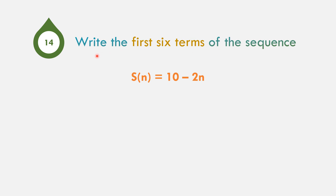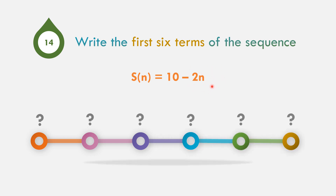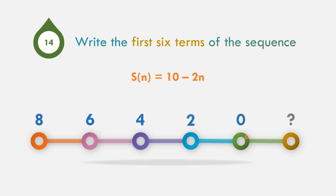In example number 14, write the first six terms where s(n) equals 10 minus 2n. Replace n by 1: 10 minus 2 is 8. Replace n by 2: 10 minus 4 is 6. Replace n by 3: 10 minus 6 is 4. The pattern subtracts 2 each time: 4 minus 2 is 2, 2 minus 2 is 0, 0 minus 2 is negative 2. The first six terms are 8, 6, 4, 2, 0, and negative 2.